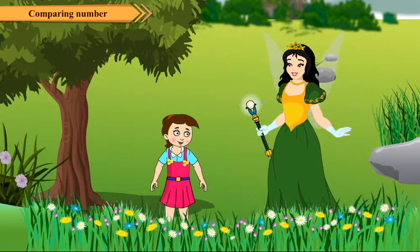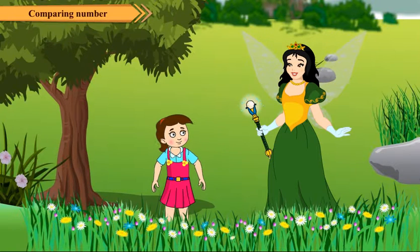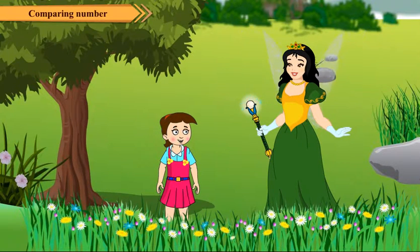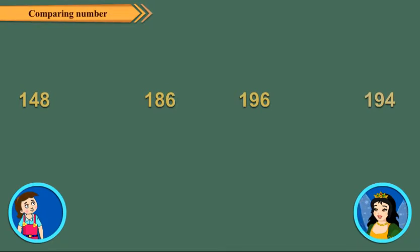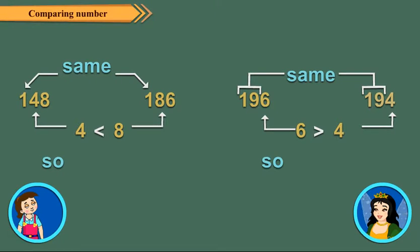But what to do when we have to compare two three-digit numbers? In that case, first compare the hundreds digit. If the hundreds digits are same, compare tens digits. And if the tens digits are also same, compare ones digits.